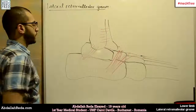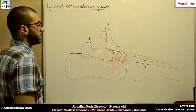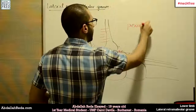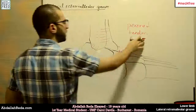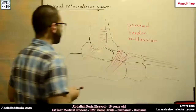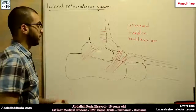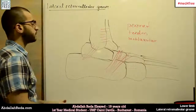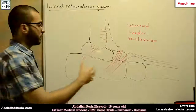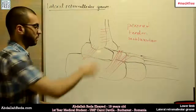This groove has clinical importance because of a condition called peroneal tendon subluxation, which is related to the peroneal tendons. What happens is that the superior peroneal retinaculum tears due to weakness or other reasons, and one or both of the peroneus longus and brevis tendons move out of the groove and dislocate, causing bruising and general ankle pain.